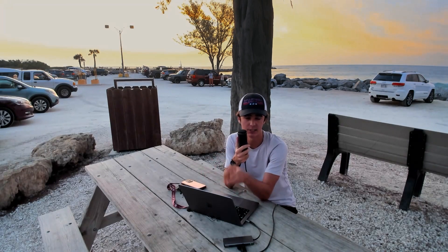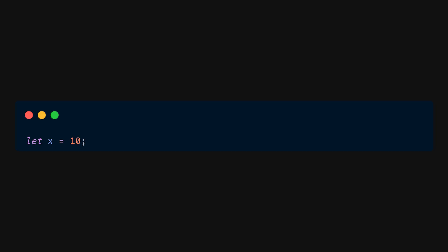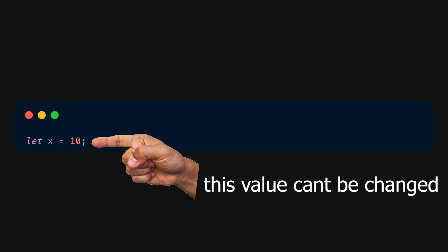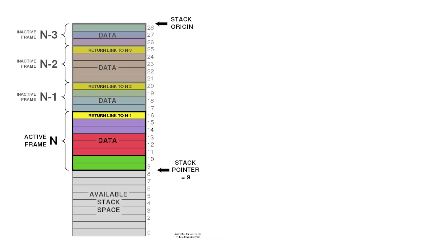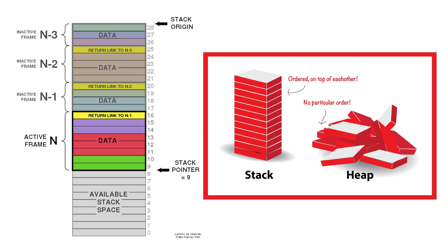Rust actually pioneered its own memory safety system called borrow-checking. When you create a variable in Rust, they are by default immutable, meaning they cannot be changed, and the variable is stored in the stack — a contiguous allocation of memory used by programs and your computer. If you create a mutable variable, only a pointer to the data is stored in the stack, and the actual data is stored in the heap, which is a lump sum of free memory. The key thing with Rust is that there can only be one pointer to a heap allocation, which is called ownership. This cuts out most race conditions and memory issues, creating memory safety while still giving the developer full control.